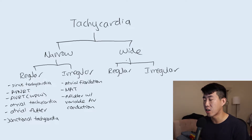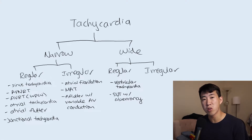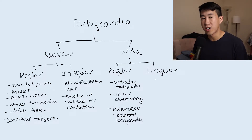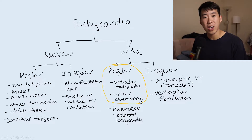Moving on to wide complex tachycardias: if the rhythm is regular, we're really trying to differentiate between ventricular tachycardia and SVT with aberrancy. SVT with aberrancy is basically AVNRT or AVRT but the patient has a baseline bundle branch block — most often a right bundle branch block — which prolongs the QRS complex, creating a wide complex regular tachycardia. Another option is pacemaker mediated tachycardia. For irregular wide complex tachycardias, we're looking at polymorphic ventricular tachycardia (torsades) and ventricular fibrillation.